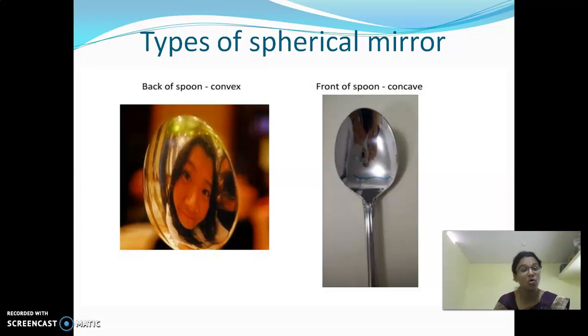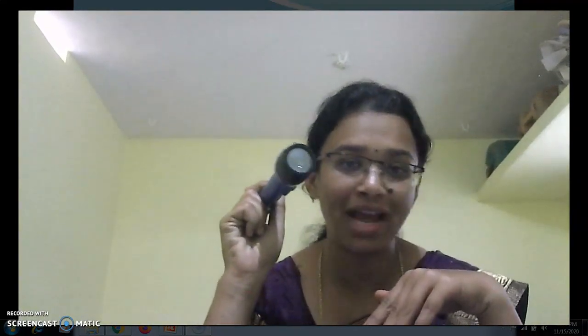Try to find some more examples of concave and convex mirror. Now you have a torch — I have a torch in my hand. Look at here, how the glass is bended outward. So it is a reflecting surface here. So this mirror is convex. Look at here — it is bended outwards. So this is an example of convex mirror.